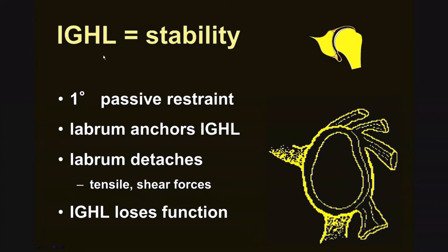The primary passive stabilizer of the joint is the inferior glenohumeral ligament. The labrum attaches the ligament to the underlying bone. Therefore, when the labrum is torn away from the bone and underlying cartilage, the inferior glenohumeral ligament is attached to a structure that is no longer attached to the bone, and therefore it loses function and becomes incompetent. This diagram shows the posterior and anterior aspects of the glenoid fossa, the labrum, the biceps tendon, and the three glenohumeral ligaments — superior, middle, and inferior — and it is this inferior IGL that is the primary passive stabilizer of the shoulder.